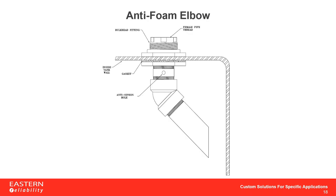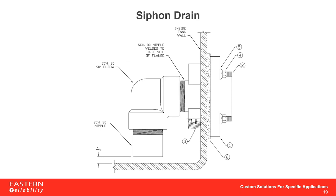Another great feature to consider is one of these anti-foam elbows, which can be installed onto essentially all of the previous fittings discussed. Similar to pouring a can of soda into a cup, it directs flow against the sidewall of the tank to prevent foaming. For lower sidewall connections used as drains or for pumping out liquids, ASVIN offers siphon drains installed for you, ensuring as much liquid as possible is removed from the tank.